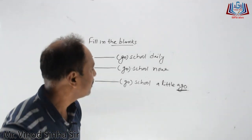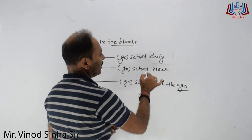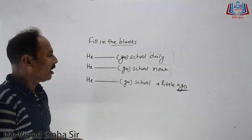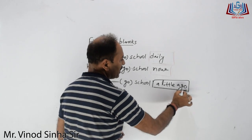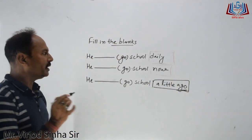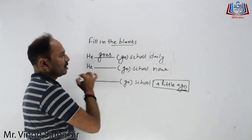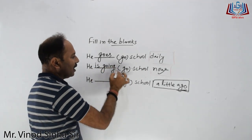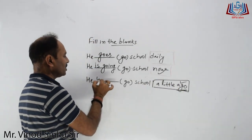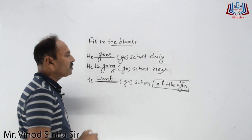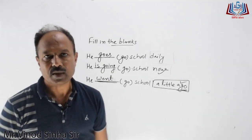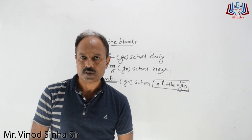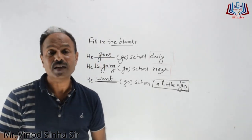When differentiating tenses for fill-in-the-blanks: if the indicator relates to present simple, apply the present simple rule. If it relates to present continuous, use present continuous. If you see 'a little ago' or 'ago' — that means anything of the past — fill in past simple. For example: 'He goes' (present simple), 'He is going' (present continuous), 'He went' (past simple with 'ago'). Each tense has its own value and purpose — you need to understand the usage and the structure.